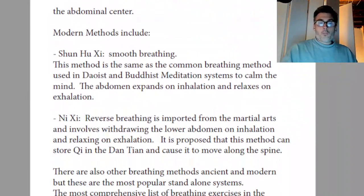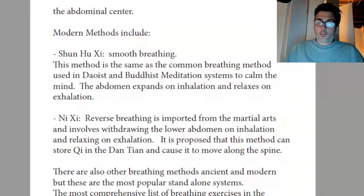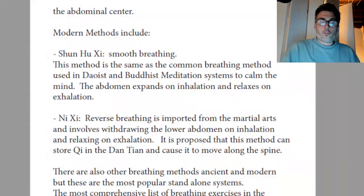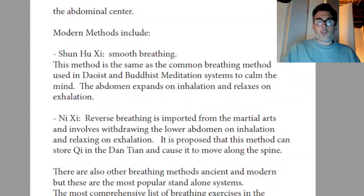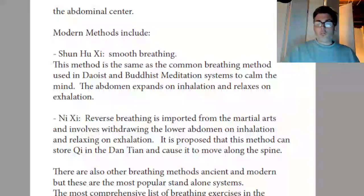We can now move on to some modern methods of breathing. These are not specifically Taoist — they're more Chinese medicine or standard Qigong — but it's important to understand them so we can have a clearer picture of the overall genre. The first one is Xun Huxi, or smooth breathing — smooth posture breathing. This method is approximately the same one as we would use in Neidan practice or in various forms of Buddhist meditation to calm the mind. When the breath comes into the body, the lower abdomen expands, and when the breath leaves the body, the lower abdomen relaxes.